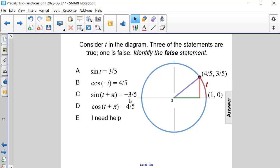Consider t in the diagram. Three of the statements are true, one is false. Identify the false statement.